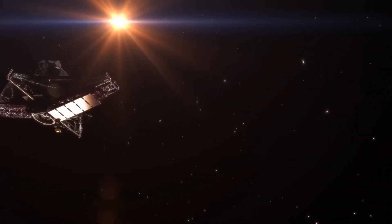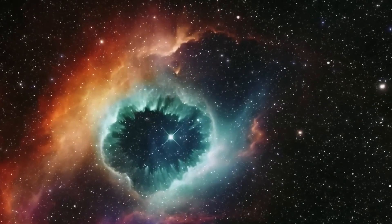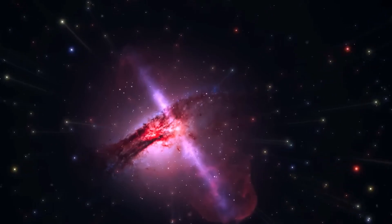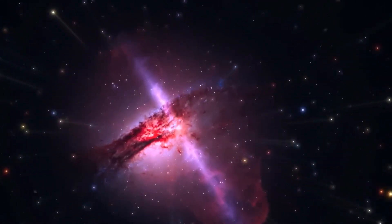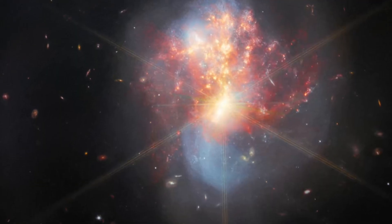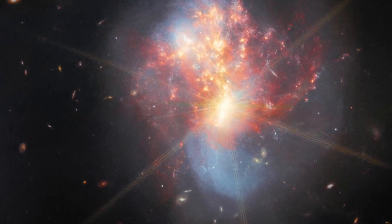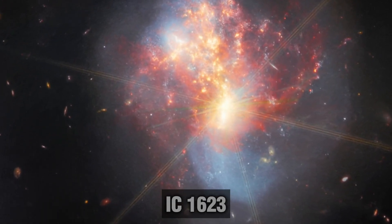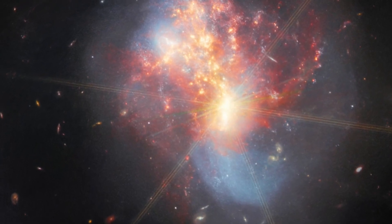The James Webb Space Telescope has a special ability to see through dust. This uncovers things that other telescopes like the Hubble couldn't see because they mainly used visible light. A picture taken by Webb of two galaxies crashing into each other, IC 1623, revealed something that Hubble missed.